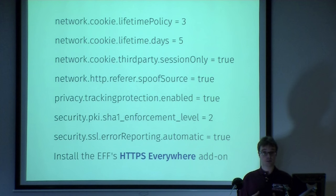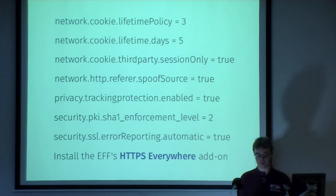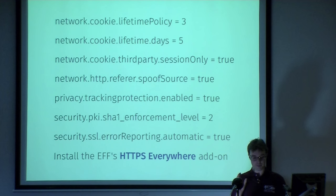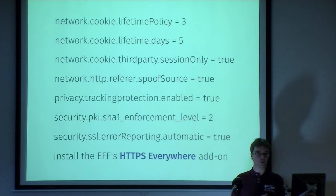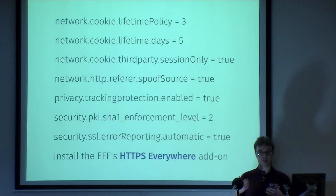The referrer spoof source option is interesting because it's equivalent to stripping out the referrer, but it actually provides a valid referrer all the time — it lies about the referrer. If you go from foo.com to bar.com and load an image hosted on bar.com, the request to bar.com's server will actually claim that it comes from bar.com. It looks at the destination site and uses that as the referrer. Question: wouldn't that be another identifier as a fingerprinting thing? Yes — the more you deviate from the default settings of the most popular browser on the most popular platform, the more fingerprintable you become.